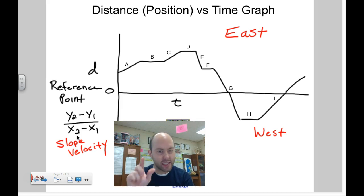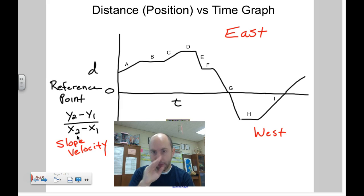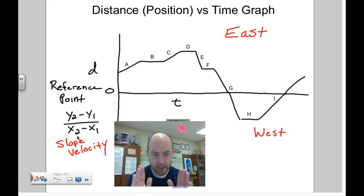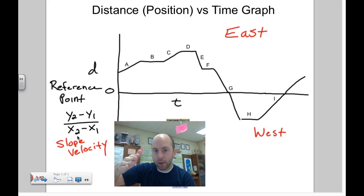Notice that E is steeper than all the rest — the steeper the slope, the faster you're moving. At F, you stop, and then something important happens at G. At G, notice I'm heading back to your house, back to the reference frame, and then I pass the reference frame and keep moving.